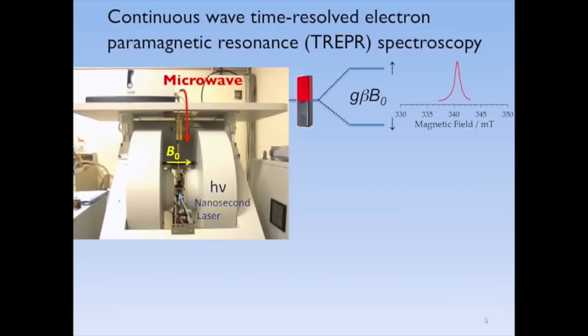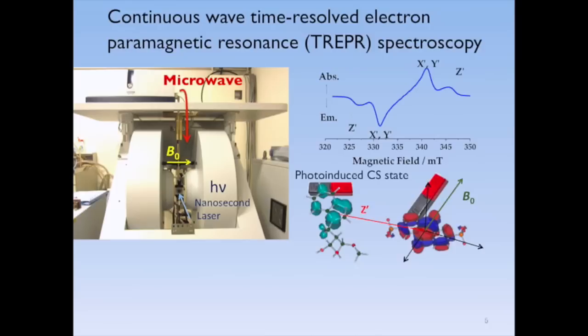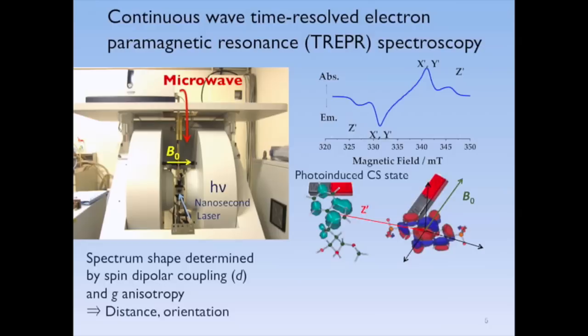When one separated spin is generated in the presence of the external magnetic field, the alpha and beta spin levels are split by the Zeeman interaction. Microwave transitions between the levels result in one EPR line at the center magnetic field. When two closer spins are generated by the photoinduced charge separation and are magnetically coupled, the spin-spin dipolar coupling between the charges will produce a broader line shape. Spectrum analysis by combination of the g-tensor anisotropy and the dipolar coupling will lead to the determination of the distance and orientation of the charge-separated state.